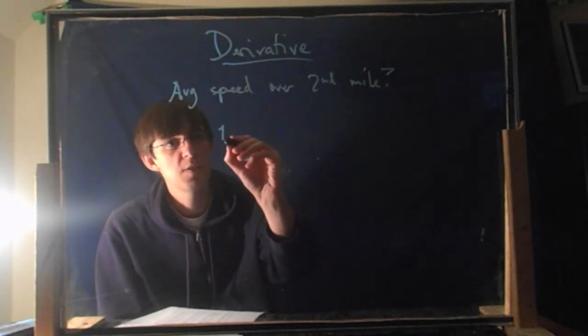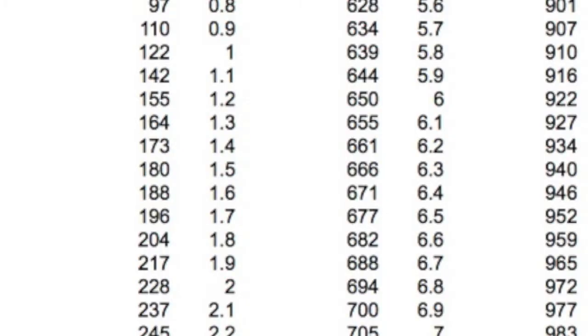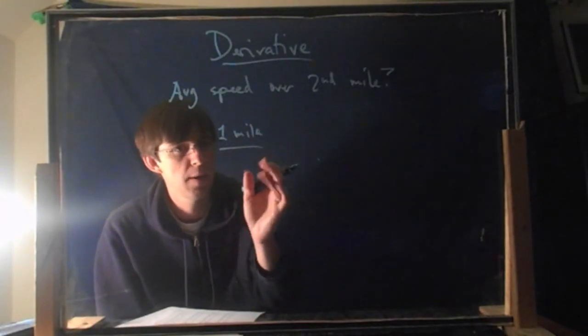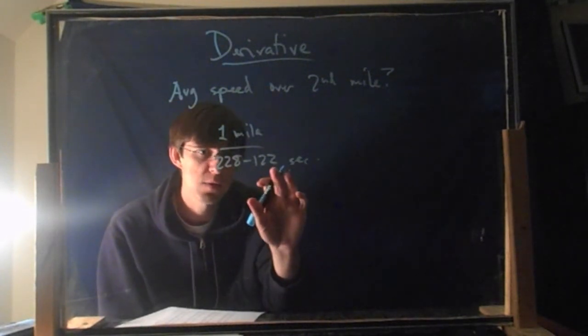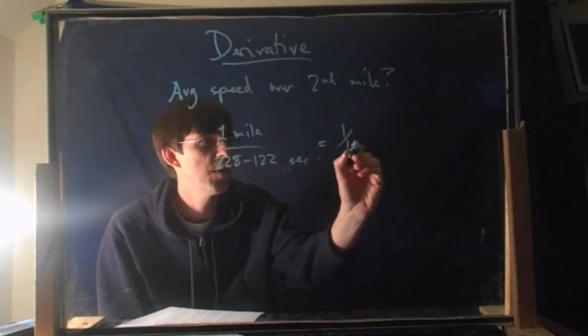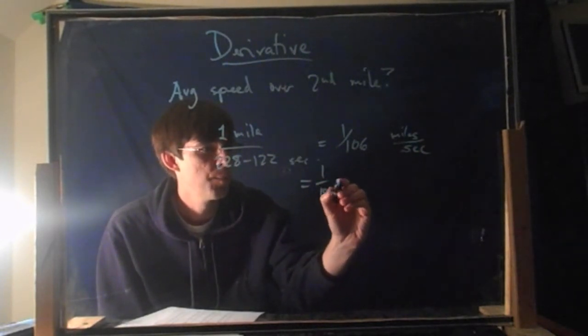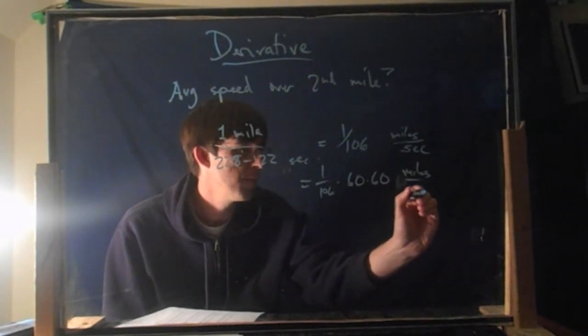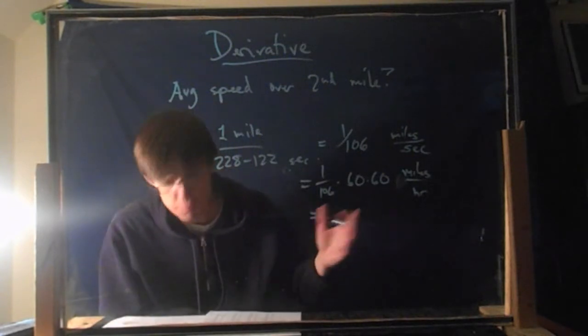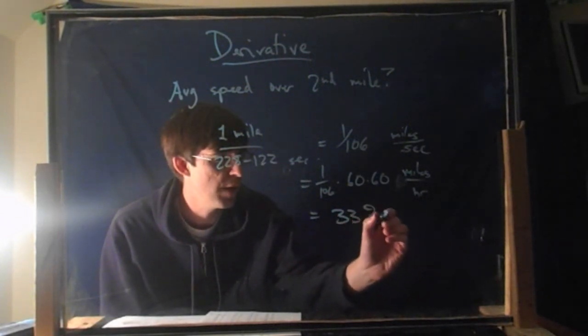So the total distance traveled over the second mile is still one mile. And then I'm going to divide by how long it took me to drive that second mile. And you can see I reached two miles at time 228, but I began one mile at time 122. So what's the total elapsed time from 122 to 228? It's, you do the math, 228 minus 122 seconds. That is 106. So this is 1 over 106 if you want miles per second, which you don't really. But again, multiply by 60 times 60 to get miles per hour.